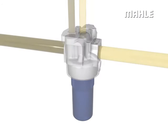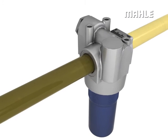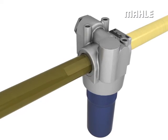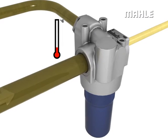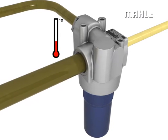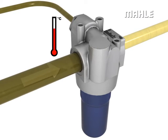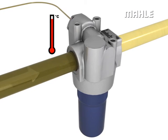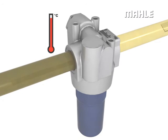During cold starting of mobile equipment, the high viscosity of cold oil passing through the filter element can create an extremely high differential pressure. Based on this differential pressure, a partial flow is returned to the tank via an integrated cold start valve. This effectively eliminates the need for a bypass valve, and only filtered oil reaches the end application. The cold start valve limits the load on the filter element, and the whole system warms up quickly.